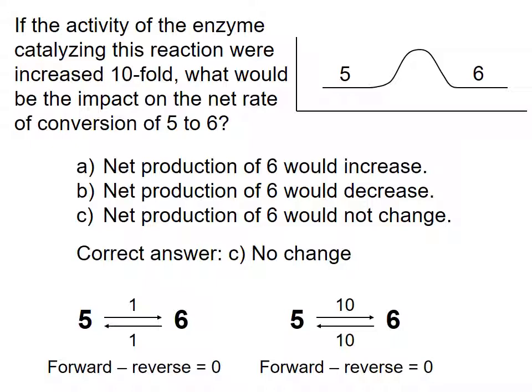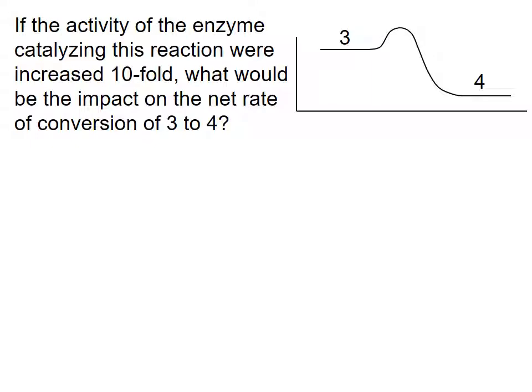Now let's consider a reaction far from equilibrium, such as the conversion of compound 3 to compound 4 in our example metabolic pathway. If the activity of the enzyme catalyzing this reaction were increased tenfold, what would be the impact on the net rate of conversion of 3 to 4?